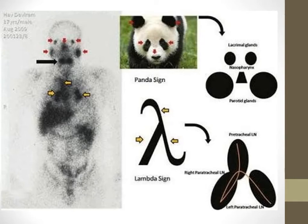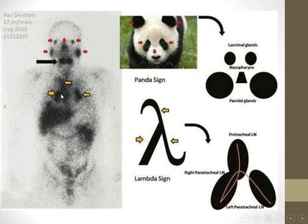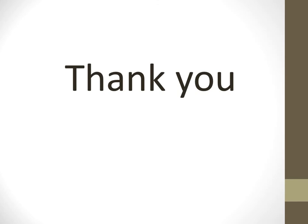In addition to the panda sign, sarcoidosis also shows the lambda sign — involvement of the hilar and mediastinal lymph nodes — which appears as a lambda sign. Both the panda sign and the lambda sign together are characteristic of sarcoidosis. Thank you very much.